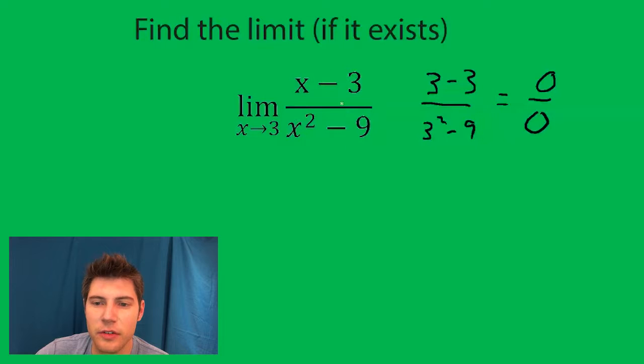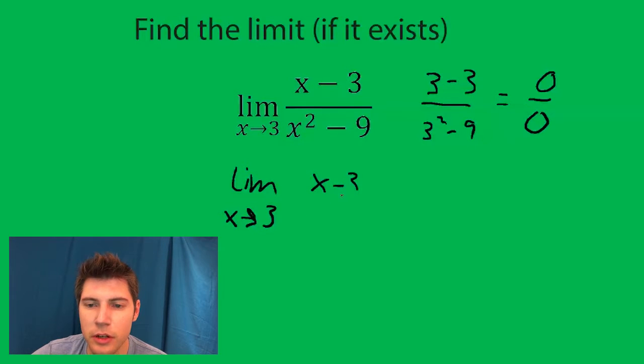This is actually a difference of two squares, so I'm going to rewrite this as the limit as x approaches 3 of x minus 3 over, and I'm going to factor this: x minus 3 times x plus 3.